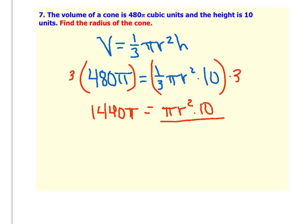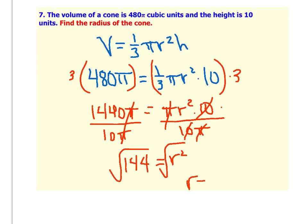Now we can get rid of the 10 and the pi, so divide by 10 pi, divide the other side by 10 pi. What happens is on this side, the 10 and the pi cancel out, so we're left with r squared. And over here, the pi's cancel each other out, and 1,440 divided by 10 is 144. So then we can square root both sides, and we get a radius of 12 units.